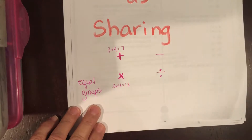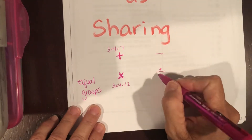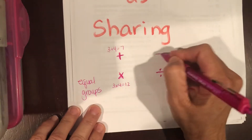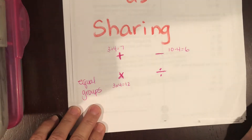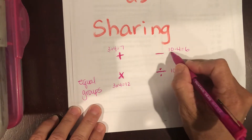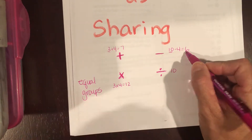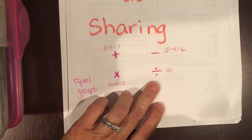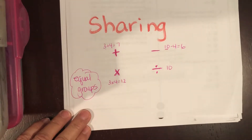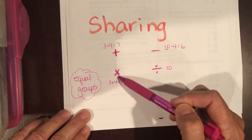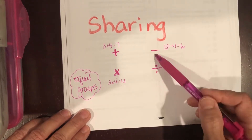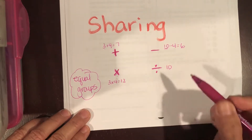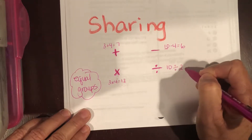Addition and multiplication are operations where numbers get bigger. Subtraction and division make things smaller — you're taking away. Subtraction might be 10 minus four leaving six. Division also starts with the biggest number, just like subtraction, but you take away in equal groups. Addition and multiplication go together because both get bigger; subtraction and division go together because answers get smaller, but division must take away in equal groups.